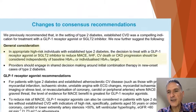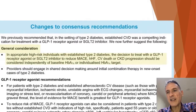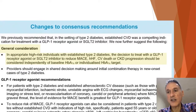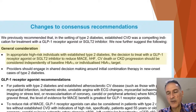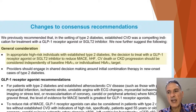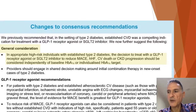As a general consideration, in high-risk patients the decision to treat with a GLP-1 receptor agonist or an SGLT2 inhibitor should be considered independently of the HbA1c. This is because these agents have been proven to reduce MACE or major adverse cardiovascular events, HHF or hospitalisation for heart failure, cardiovascular death, or CKD progression.